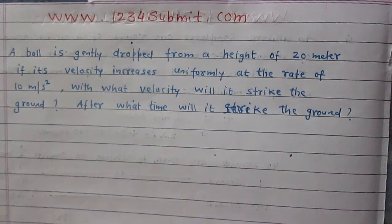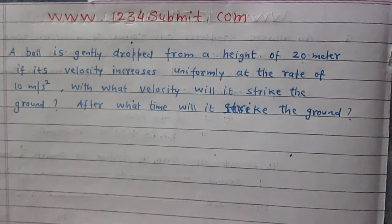In this question, we are given that a ball is gently dropped from a height of 20 meters. Ball is gently dropped, meaning the initial velocity of the ball is 0.